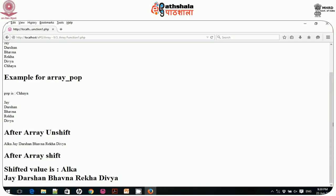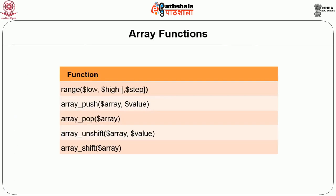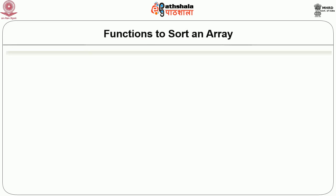These four functions — array_push(), array_pop(), array_unshift(), and array_shift() — can be used for LIFO and FIFO data structure operations. These are the four basic array manipulation functions. Of course, there are some more functions — let us discuss them one by one.